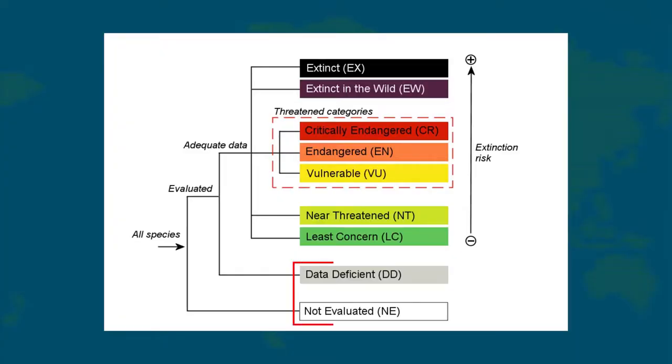We'll start at the bottom, with the two categories which indicate that there is no estimation of risk of extinction, though there are different reasons for both. Firstly, 'not evaluated' — as it sounds, there's been no attempt to assess the current status of the species. Considering the IUCN has assessed over 98,000 species worldwide, and estimates of the total number of species globally vary wildly from 3 million up to 30 million, this means it is by far the largest of these nine categories. It is important to note, however, this doesn't mean these animals should not be considered as threatened.